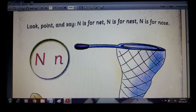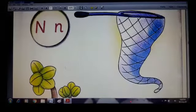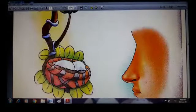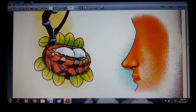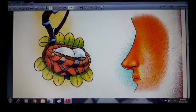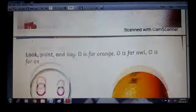Here is a picture of net. N is for nest, nest means bird's nest. And N is for nose, nose means nose. Now today our class work is...